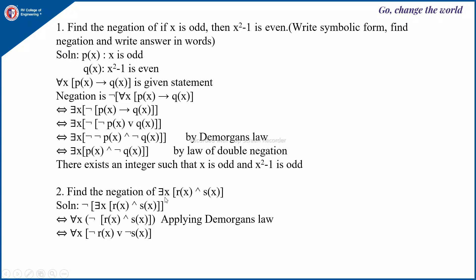Finding the negation of ∃x (r(x) ∧ s(x)): the negation of ∃ becomes ∀x, and the negation applies to (r(x) ∧ s(x)). By De Morgan's law this is equivalent to ∀x (¬r(x) ∨ ¬s(x)). We will continue in the next video. Thank you.